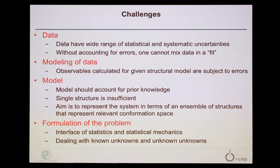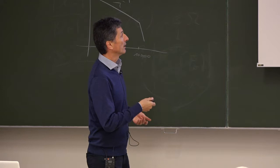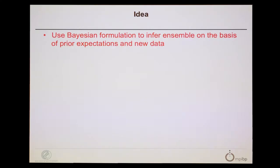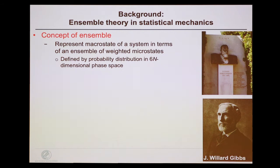One problem is how to formulate the inference of an ensemble properly. We are at the interface of statistics and statistical mechanics, dealing with known unknowns and unknown unknowns. The main idea was to formulate the problem in a Bayesian framework, trying to infer the ensemble on the basis of our prior expectations and any data we can get hold of. There is also an interesting connection, at least to me, to the theory of ensembles.